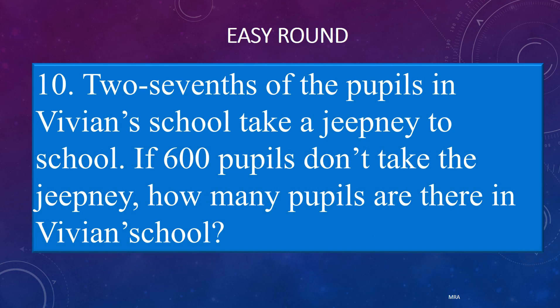10. Two-sevenths of the pupils in Vivian's school take a jeepney to school. If 600 pupils don't take the jeepney, how many pupils are there in Vivian's school? Go!